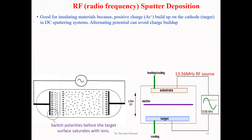Regarding radio frequency (RF) sputter deposition: RF sputtering is particularly good for insulating materials because positive charge builds up on the cathode targets in DC sputtering systems. Alternating potentials can avoid this charge buildup. The sputtering system switches polarities before the target surface saturates with ions.